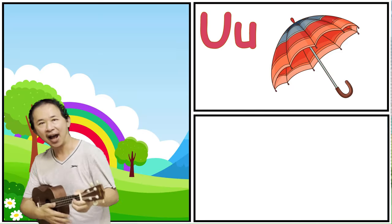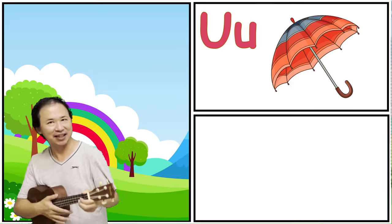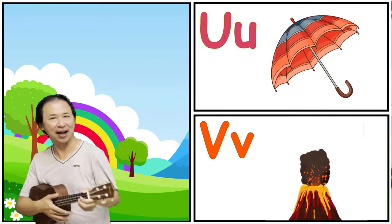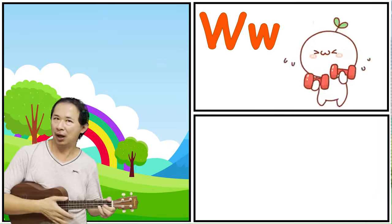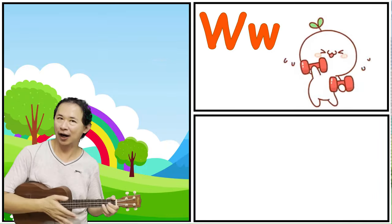U is for Umbrella. V, Volcano. W, Workout.